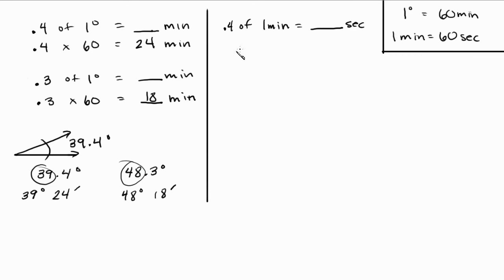Okay, so we do the same thing. If 1 minute is 60 seconds, then we just write 0.4 of, which is times, 1 minute is actually 60 seconds, and if we calculate that out, we're going to get 24 seconds. Now we'll do the same thing with the same numbers we did before because we're used to them already. We like these numbers. 0.3 of 1 minute is equal to how many seconds? Well, that's 0.3 times 1 minute is 60 seconds. So 0.3 times 60 is equal to 18 seconds. Simple.